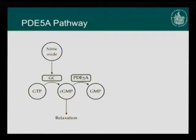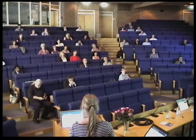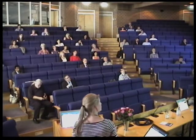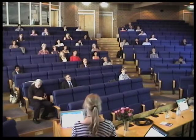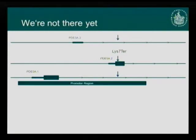But how does that fit our phenotype? In the PDE5A pathway, this protein converts cGMP to GMP. If we have reduced levels of PDE5A, we would have increased levels of cGMP, which leads to relaxation — that would be protective and not increase the risk of myocardial infarction. That doesn't fit our phenotype, so we looked again at the variant and its regulatory region, and found that this variant is also inside the promoter region of the gene.